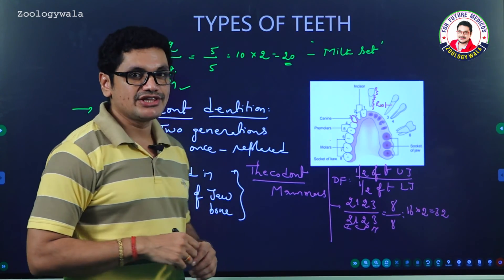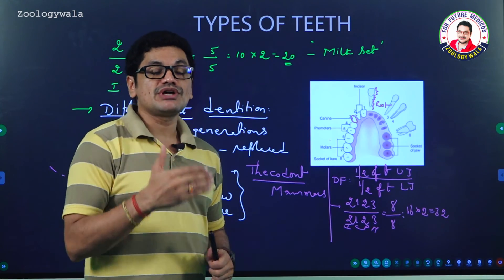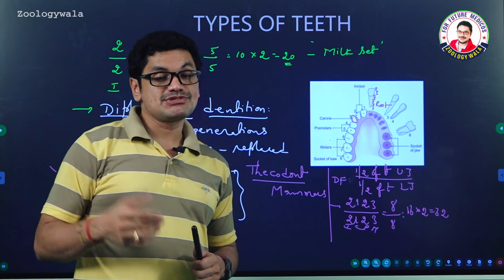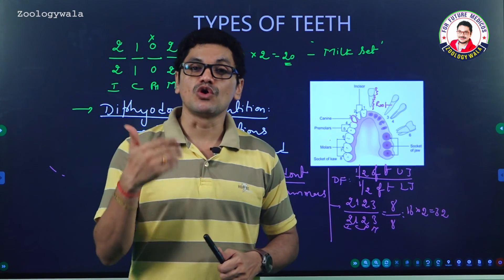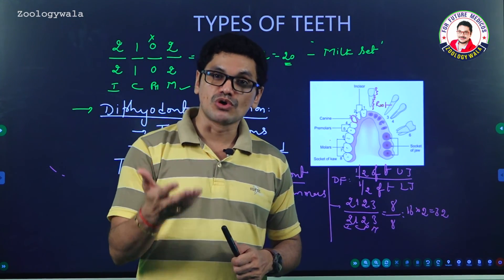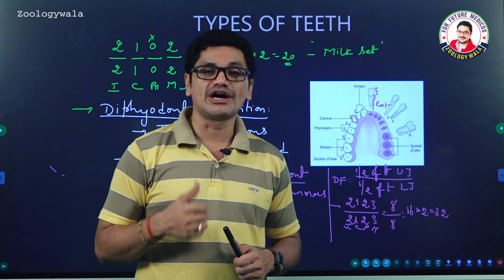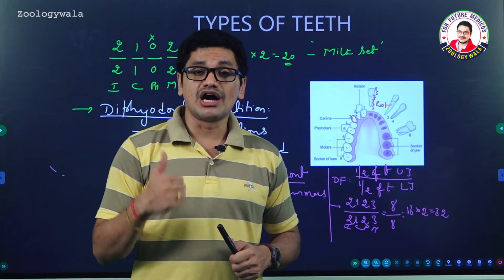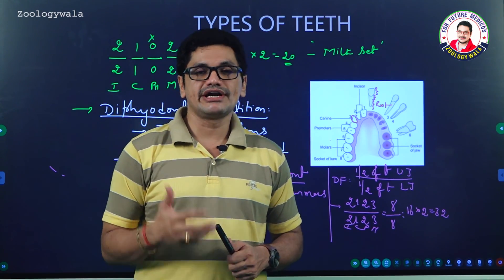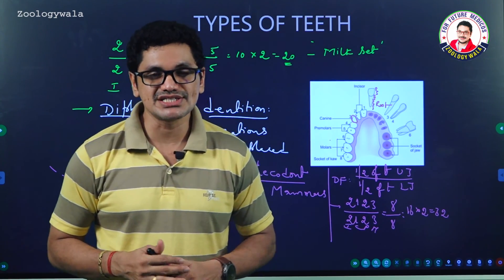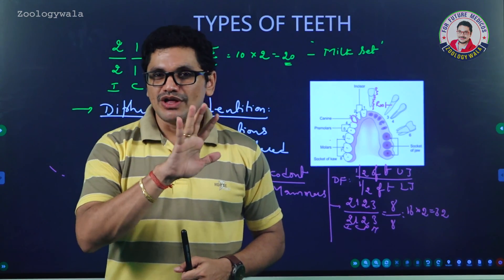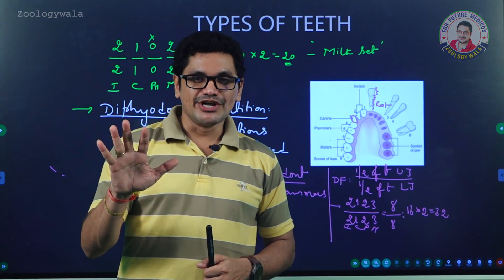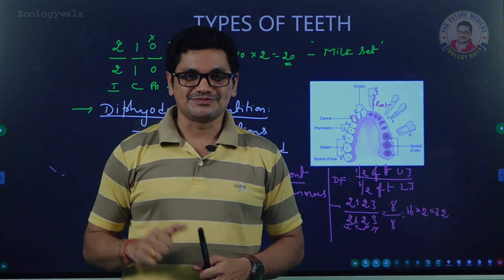These are the types of teeth. In addition, there are different types of teeth seen in animals — like lophodont, bunodont, brachydont, selenodont, and solenodont — which I am going to explain in my next video. That's all about this video, thank you.